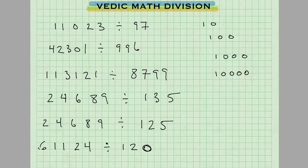So these are cases when your divisor is close to a base number. Here we have 135, that's close to base number 100. 125 is close to base number 100. 120 is close to base number 100. So this could be when they're above a base number or below a base number.